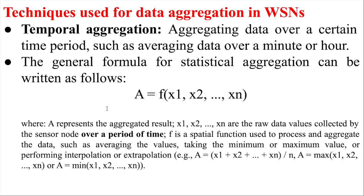Previously we used location; now we use the time period. This is temporal aggregation — aggregating data with respect to time. For example, if you want to monitor vehicles in the daytime, rather than aggregating day and nighttime vehicle data together, it is better to collect sensory data and do aggregation only from sensors that collect daytime data, not nighttime data. Depending on your application, you can consider the entire 12-hour daytime or aggregate hourly — the entire day's data, and so on.